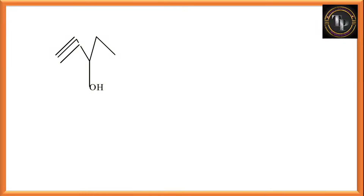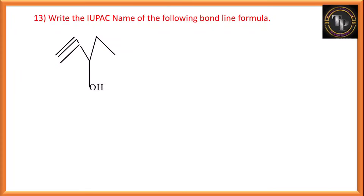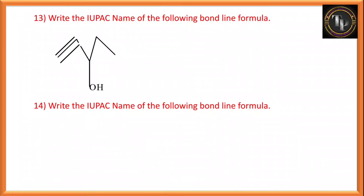The next question asks for the IUPAC name of a given bond line formula containing a triple bond. The triple bond starts from first position. Counting from left: one, two, three — third position has an alcoholic group. Counting from right: also third position for the alcoholic group. So we start from the left side, giving lowest locant to the triple bond and functional group. Counting: one, two, three, four, five. So the name is pent-1-yn-3-ol.